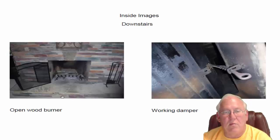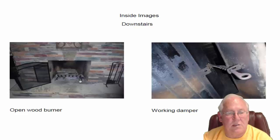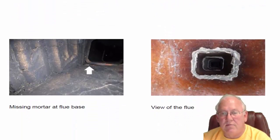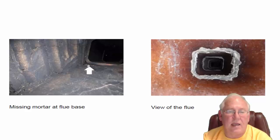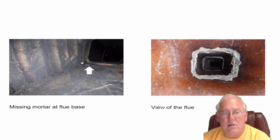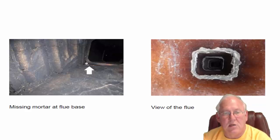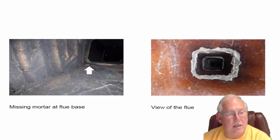Let's go through this one by one. We'll take the downstairs fireplace — we can see it is an open wood burner with a working damper, no problems with that. The flue system looks good. We do have a nice big opening here at the base of the flue. That can lead gases — carbon monoxide and smoke, since we're burning wood — into the walls of the house. That is considered a leaky chimney, and it's an easy repair. I've given you a price on making that repair.